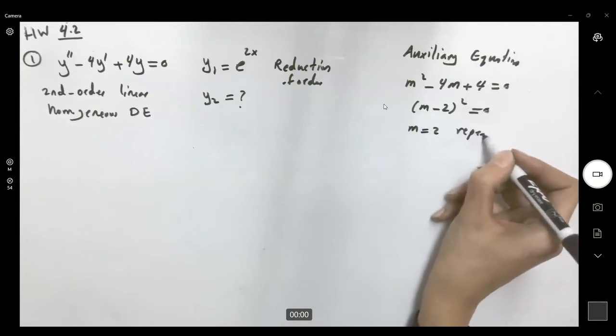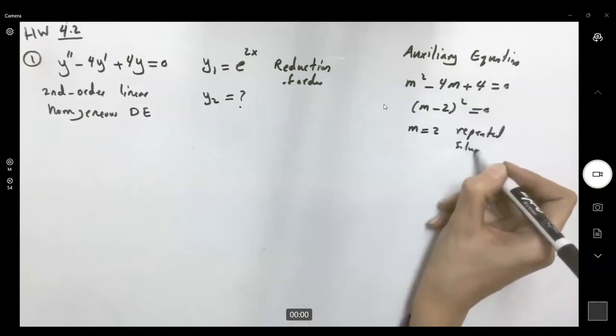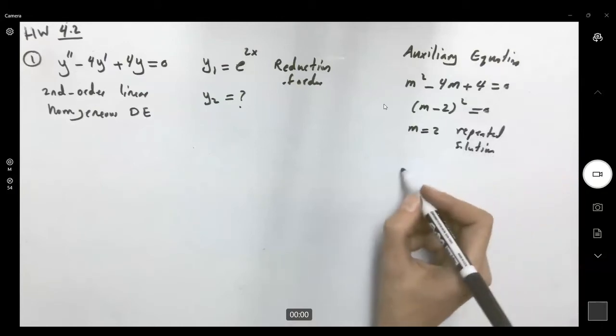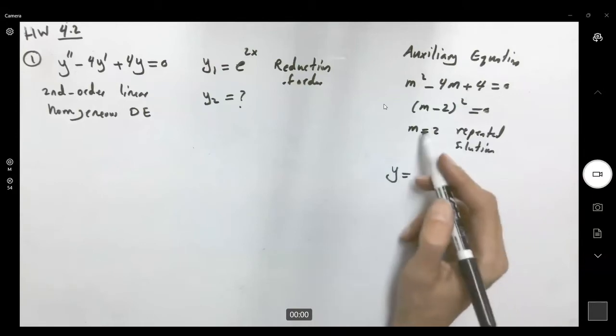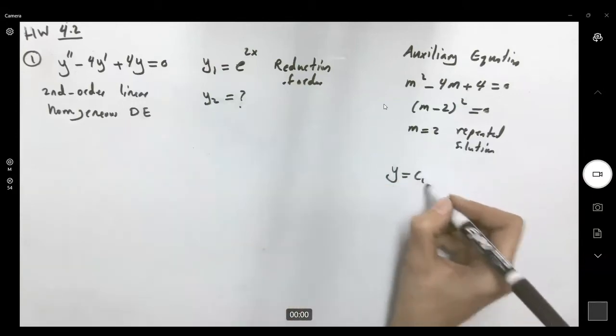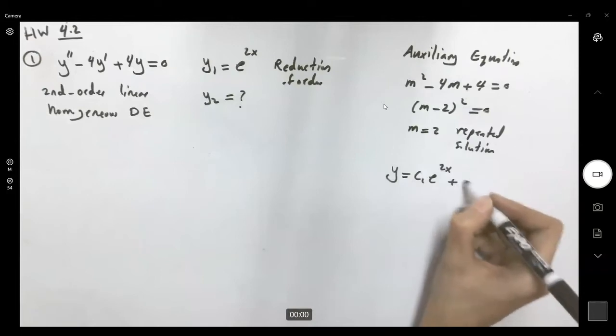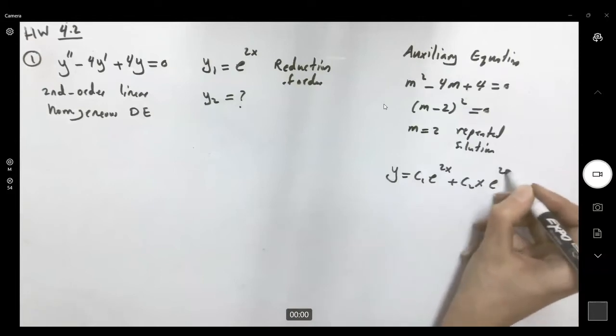We have a repeated solution. This is our second case. It says the general solution for that differential equation can be written as c1 e to 2x plus c2x e to 2x.